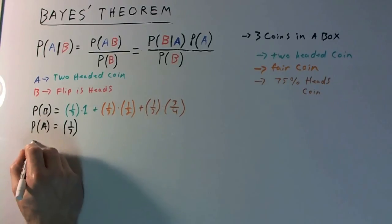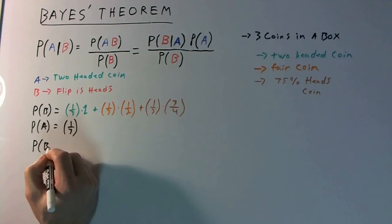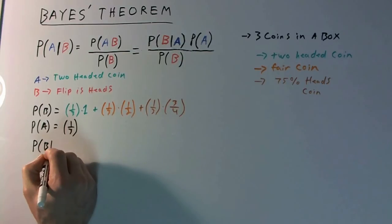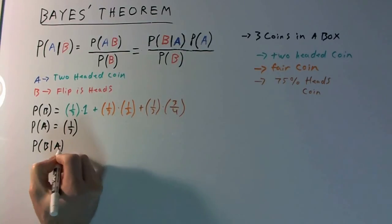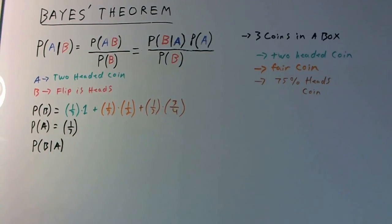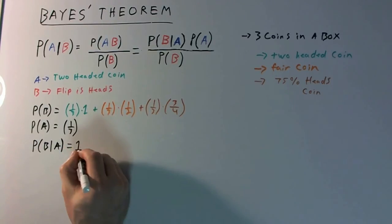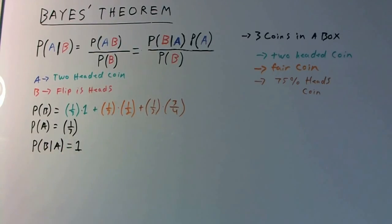So the probability of B given A — the probability that the flip is heads given the fact that it's a two-headed coin — we know it's a two-headed coin, we flip it, it's guaranteed to be heads. So the probability of B given A is going to be one. It's always going to come up heads.